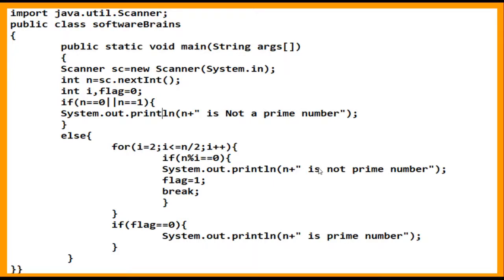A prime number should have only two factors: 1 and itself. So if n is divisible by any number other than 1 and itself, we set flag to 1 and break out of the for loop. After the loop, we check: if flag is still 0, the number is prime; if flag has become 1, the number is not prime. For example, 6 is divisible by 2, so flag becomes 1 and 6 is not a prime number.